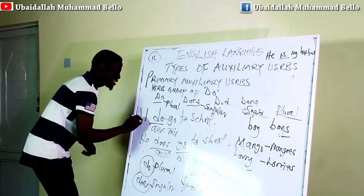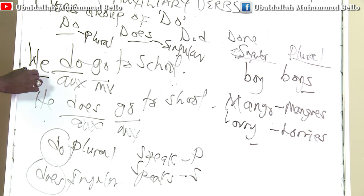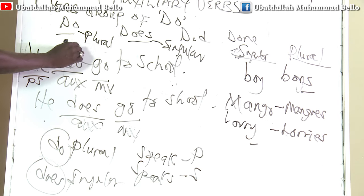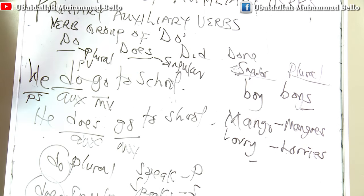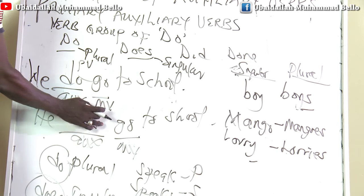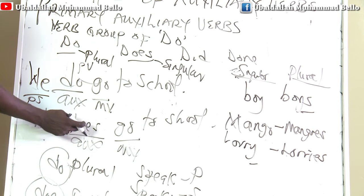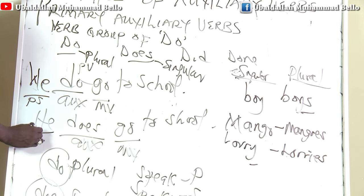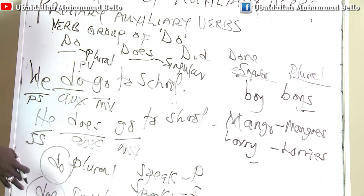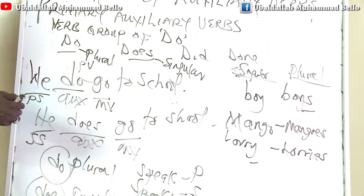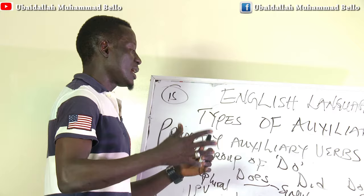'We do go to school.' 'We' here is a plural subject and it has to go with 'do,' which is a plural verb, functioning here as auxiliary. 'Go' is the main verb. 'He does go to school' — that is why it goes with 'does,' the singular verb. You cannot say 'we does go to school,' and in that case, we say you do not know the grammar or the rule of English.